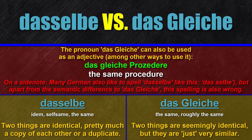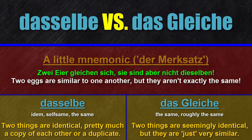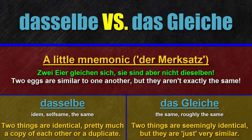Actually there's a German mnemonic in order to remember the difference: 'Zwei Eier gleichen sich, sie sind aber nicht dieselben.' Two eggs look similar or samey, but they aren't exactly the same. Works kinda, I guess.